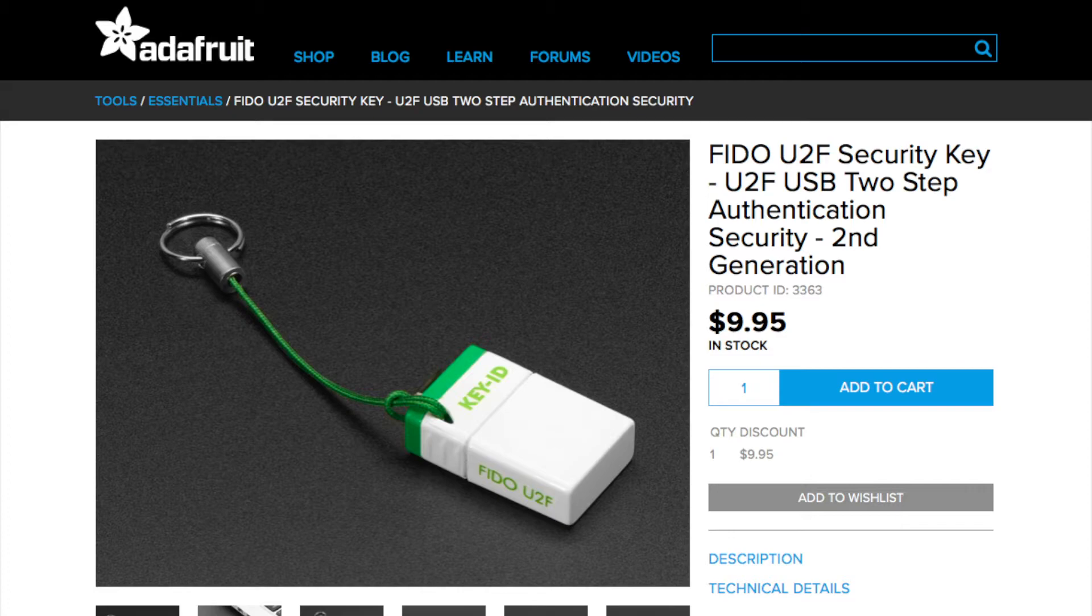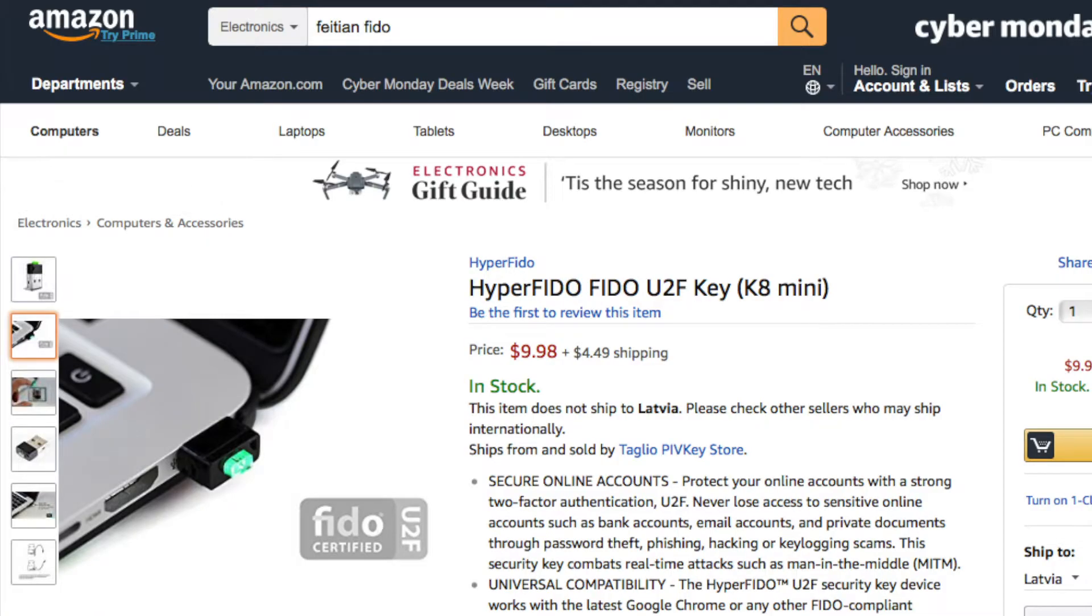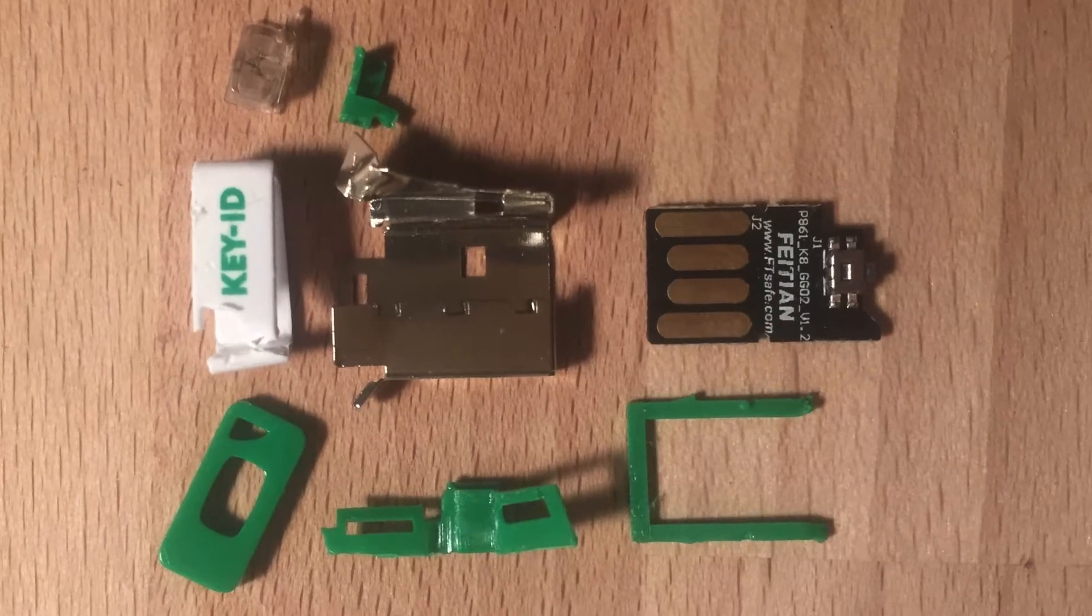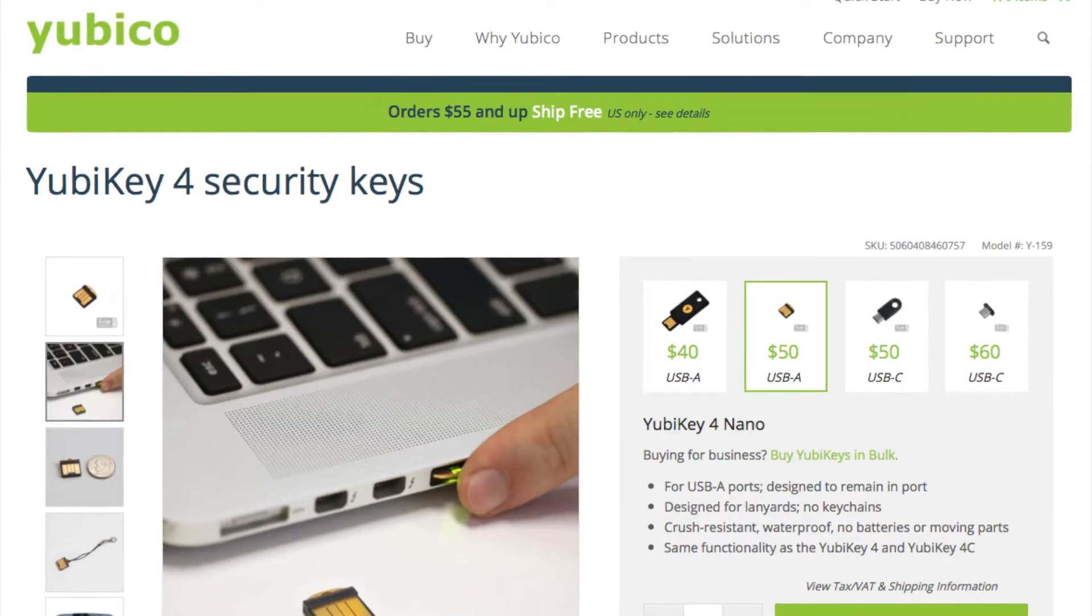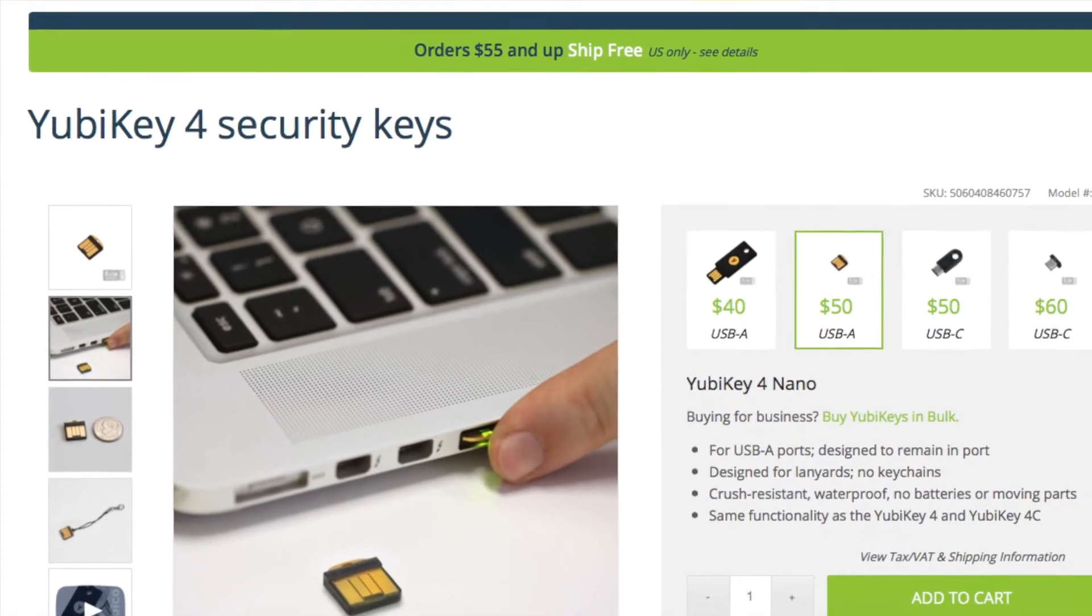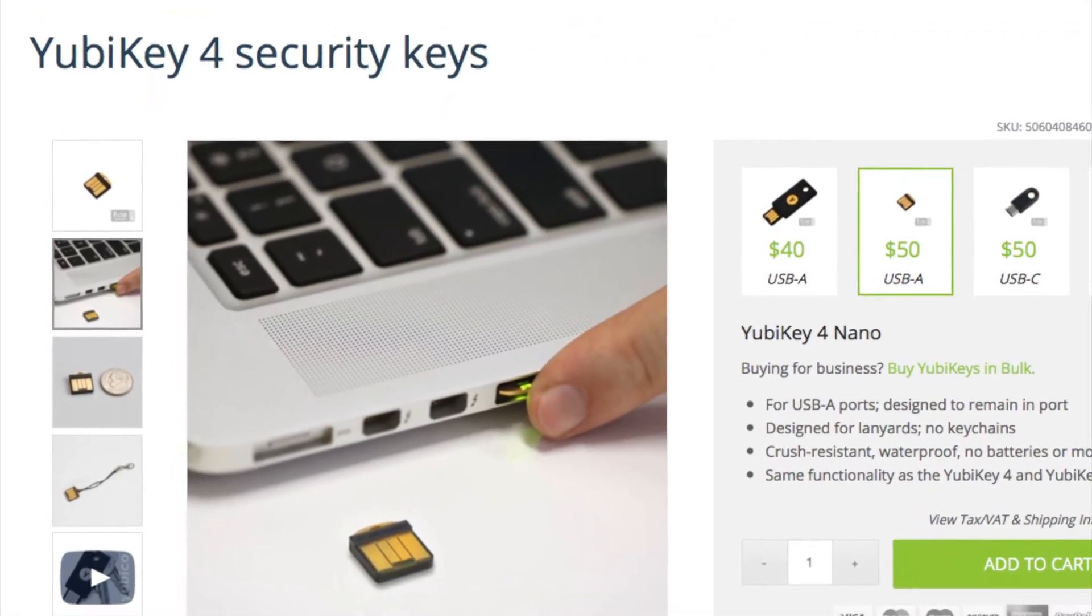They're all very similar but they're produced by the same Chinese company called Feitian and they're very nice because they're very small, very similar to the Yubikey Nano that you can get for 50 US dollars which is way more expensive.